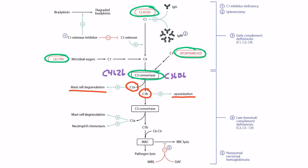The second role of C3B is to lead to the formation of a C5 convertase. C5 convertase is very similar to C3 convertase in that it takes C5 and cleaves it into C5A and C5B. C5A will act just like C3A and stimulate mast cell degranulation, but it also has a second role of upregulating neutrophil chemotaxis.